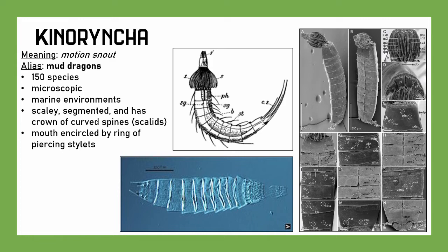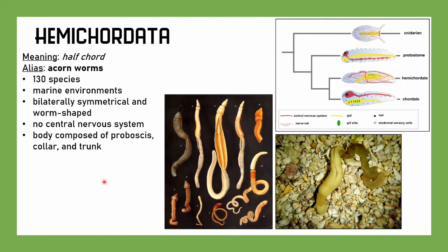We have Hemichordata. There's chordata in the name, and hemi means half, so it means 'half chord.' They're also known as acorn worms for the acorn-like head tip. They are in marine environments, bilaterally symmetrical, and unsurprisingly worm-shaped. They have no central nervous system — just a nerve net. Their body is broadly composed of a proboscis, a collar, and a trunk. They have guts and gill slits but not eyes like chordates. From the taxonomy, hemichordates are closely related to chordates, unsurprisingly.